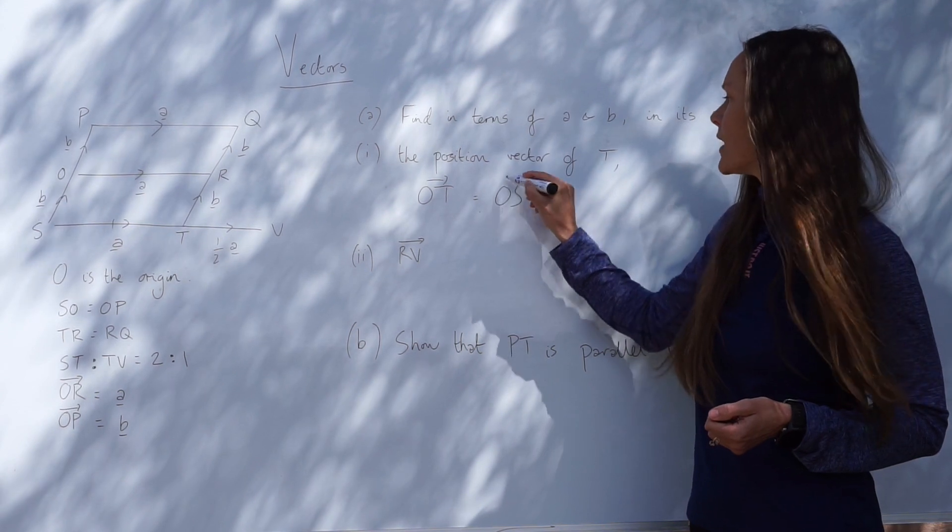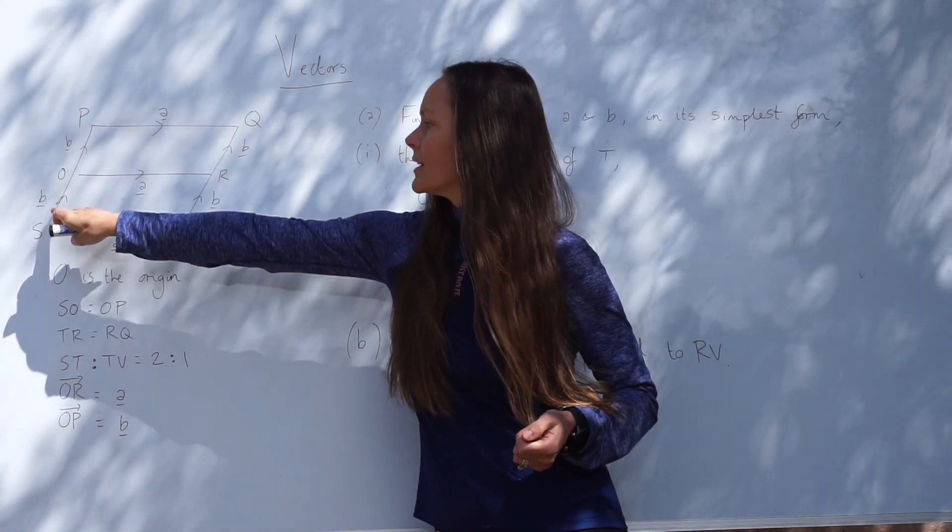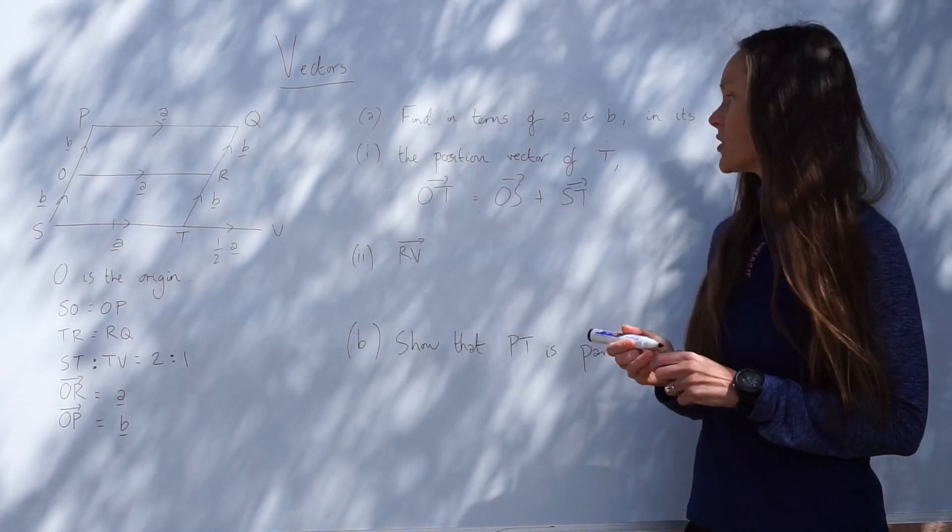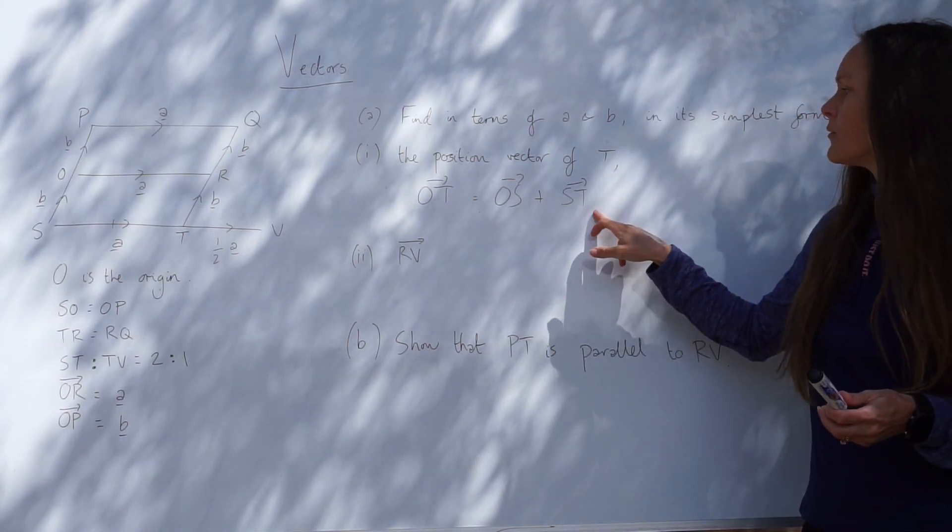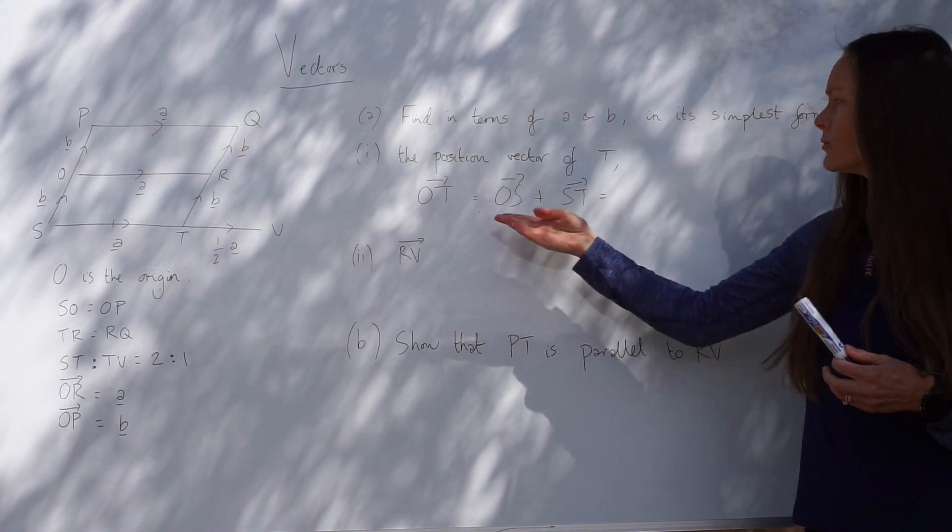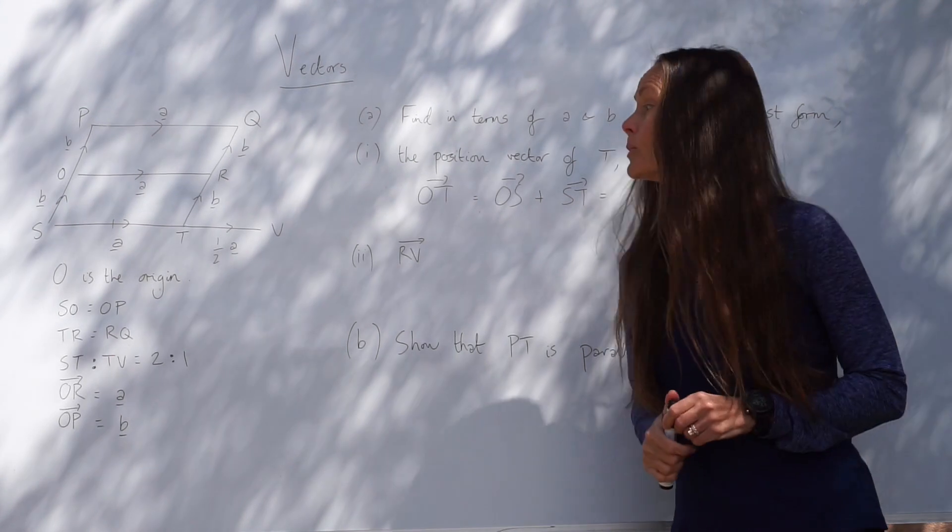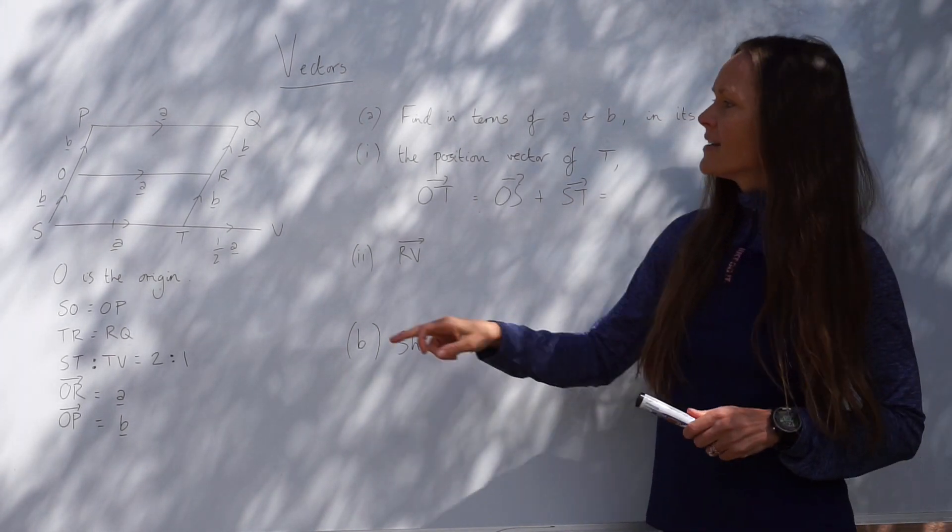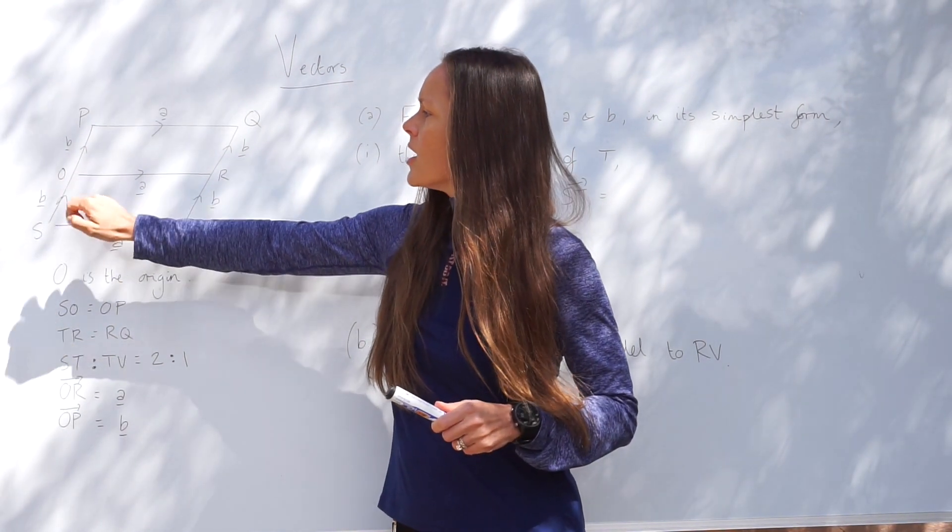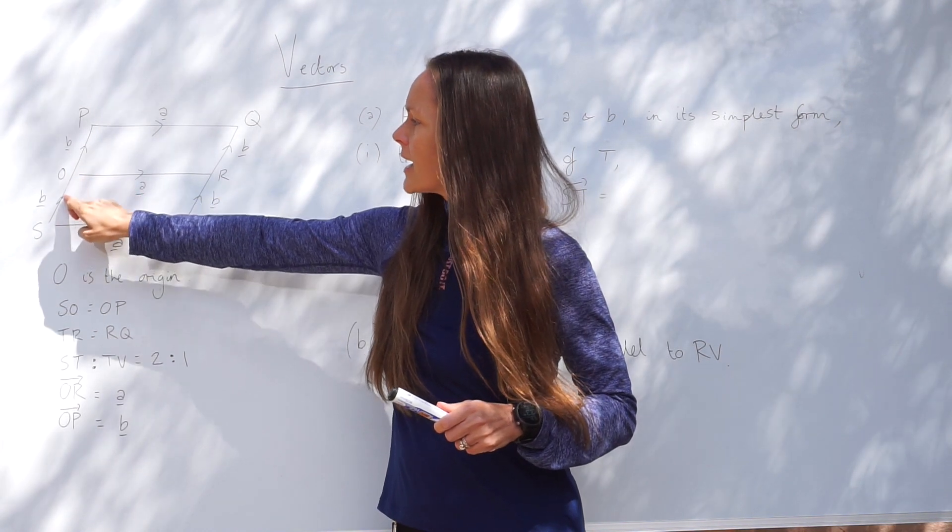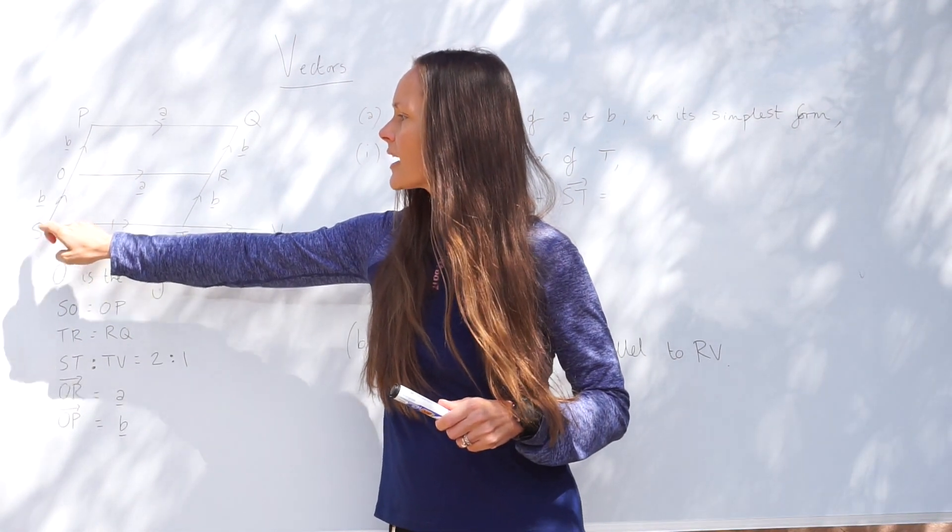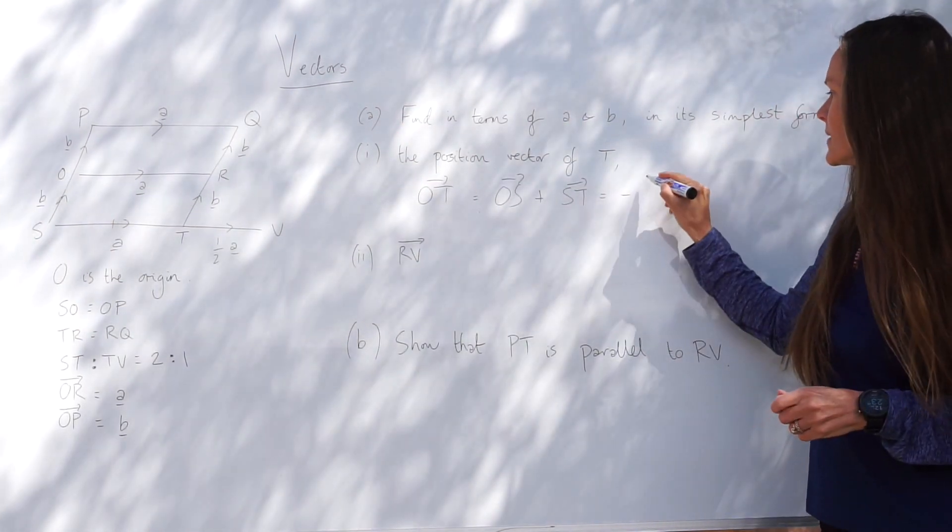So I'm first going to find O to S, and then I'm going to travel from S to T. It's not essential, you don't have to write the direction, but I do think it's useful to write this down, especially when the questions get a little bit more difficult. So O to S, well, this is B, but only if we're travelling in this direction. Because we're travelling downwards against the direction of that arrow, it would become negative B. So we can replace O to S with negative B.